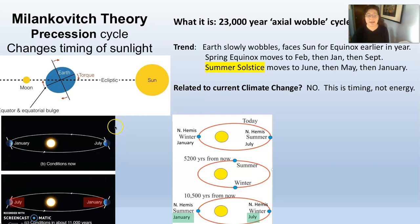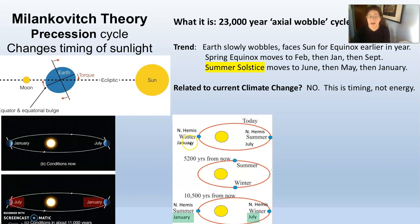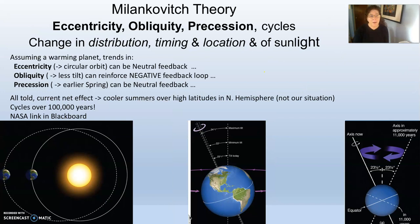I agree with everything in this graphic from the text, but I do not agree with their representation of the months of the year. January will always be closer to the Sun, and July will always be the farthest point, even 11,000 years from now. The angle of the Earth will change, but the months will not. I agree with this diagram showing winter in January and summer for the northern hemisphere in January 11,000 years from now — this diagram is from the University of Michigan, so I feel confident there is a typo in your text.